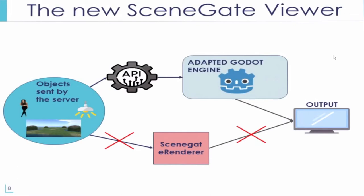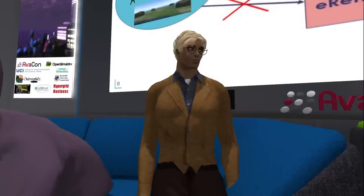This is a simplified structure of how we would like the new SceneGate viewer to function. The three goals we have set are: first, to create a transition interface as an API that would convert everything that exists inside the 3D world sent from the server into entities that can be recognized and used by the Godot engine. Our second goal is the integration of Godot's rendering functionalities inside the SceneGate viewer with the creation of an adapted Godot engine. Our third goal is the rendering of the world and creating an output onto the screen for the user.